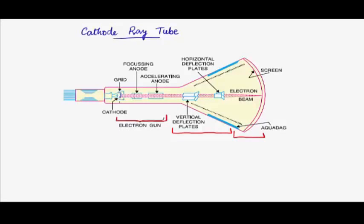This heated cathode, which is made out of a material that is a good thermionic emitter, will reach high temperatures. And as a result, this cathode will start to emit electrons.